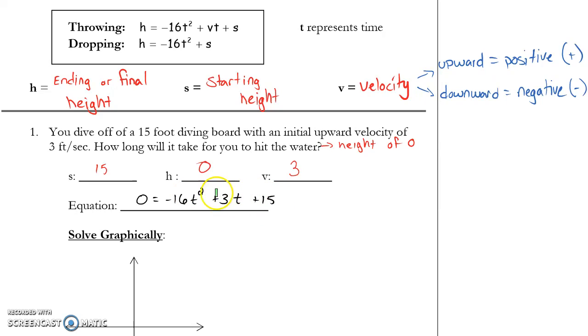So really the focus here is, what am I putting in for h, v, and s? Everything else from my function up here stays exactly the same.